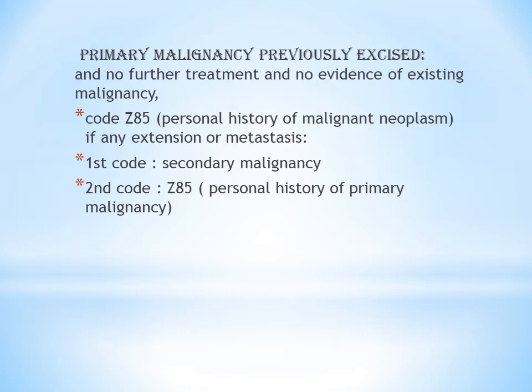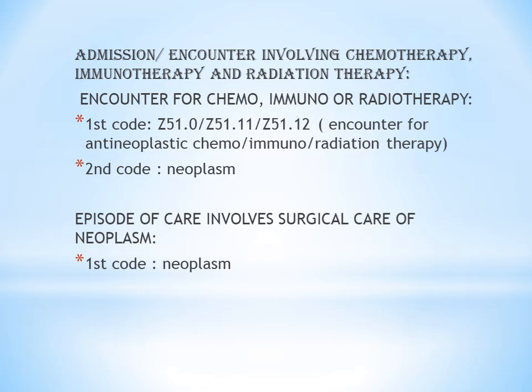The next guideline is admission or encounter involving chemotherapy, immunotherapy, and radiation therapy. These all come under the treatment procedures of malignancy. When the patient comes to the hospital for treatment, you first give a Z51 code to indicate whether it is for chemotherapy, immunotherapy, or radiation therapy. For chemotherapy, give the Z51 code for encounter for antineoplastic chemotherapy; for radiation therapy, give the corresponding Z51 code. The second code should be the neoplasm code for which malignancy treatment is being sought.